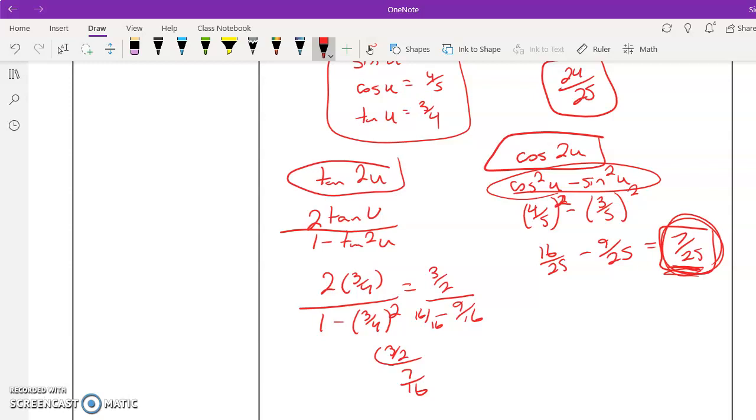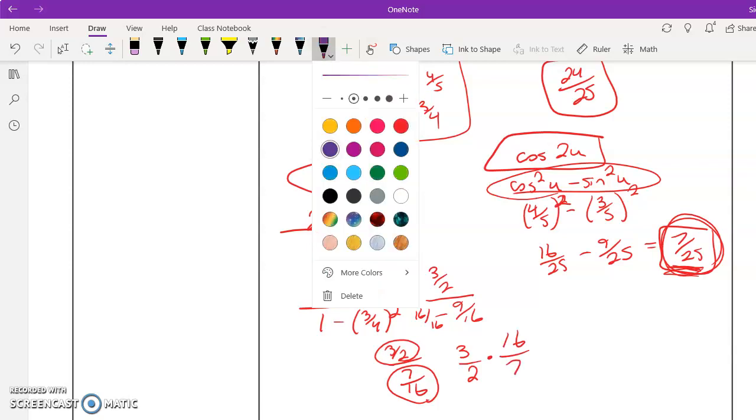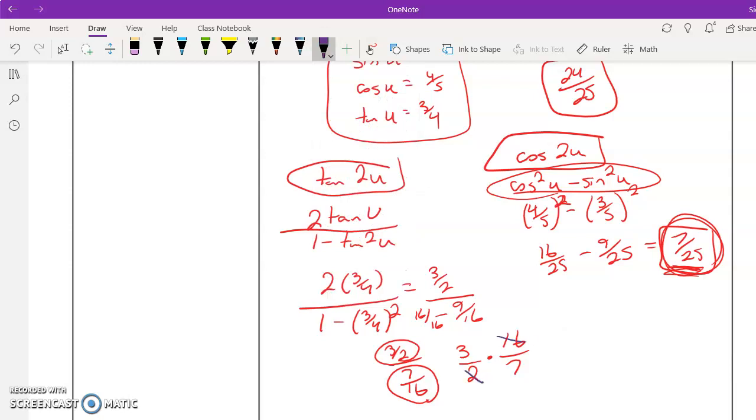So when you divide by a fraction, you multiply by its reciprocal. So 3 halves times 16 over 7. So let me do this in a different color. That cancels out to 8. So I have 24 sevenths.